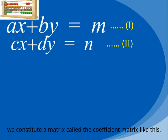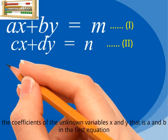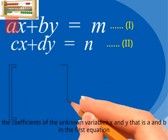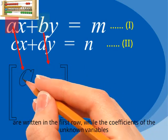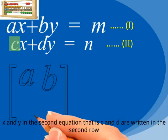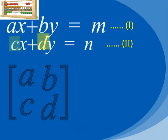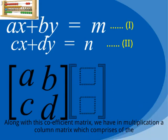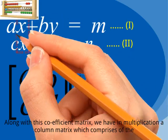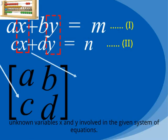We constitute a matrix called a coefficient matrix. The coefficients of the unknown variables x and y — that is, a and b in the first equation — are written in the first row, while the coefficients of the unknown variables x and y in the second equation, that is c and d, are written in the second row. Along with this coefficient matrix, we have a column matrix comprising of the unknown variables x and y involved in the given system of equations.